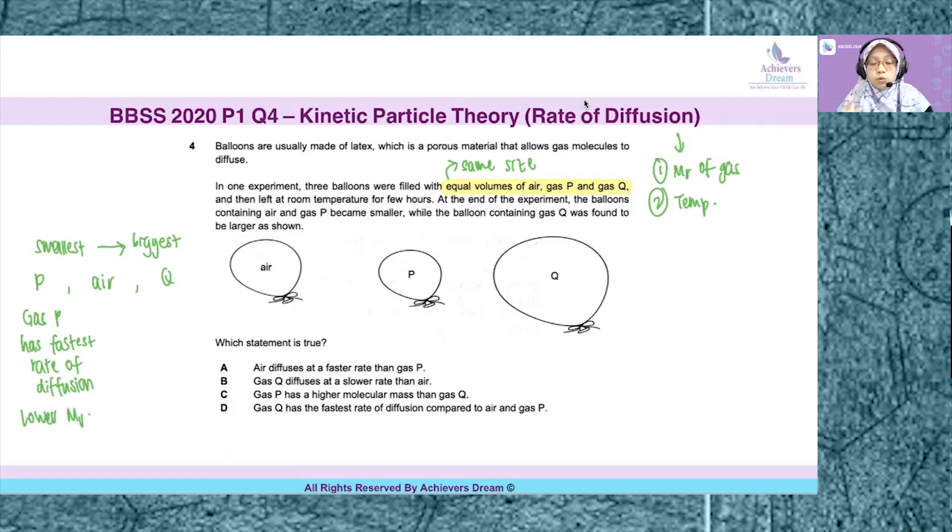Why? Because the relationship between molecular mass and rate of diffusion is the lower the MR, the faster the rate of diffusion.